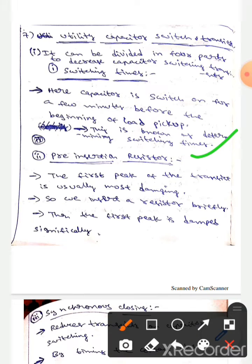The next one is pre-insertion resistor. Here the first peak of the transients is usually most damaging, so we insert a resistor briefly. Then the first peak is damped significantly.